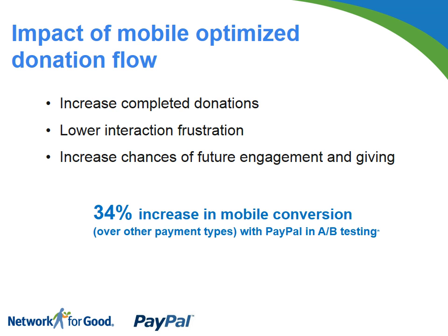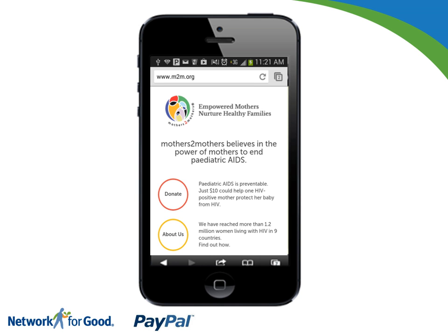One more stat: if you have a website that is not mobile optimized and then you optimize that giving or payment flow, we've seen up to a 35% increase in mobile conversion — meaning payments being completed. For a nonprofit, that can be a huge difference on your mission and impact if you have 34% more donations coming through. I'll pass it over to Karen, who will give us some examples of what's out there and what people are doing.